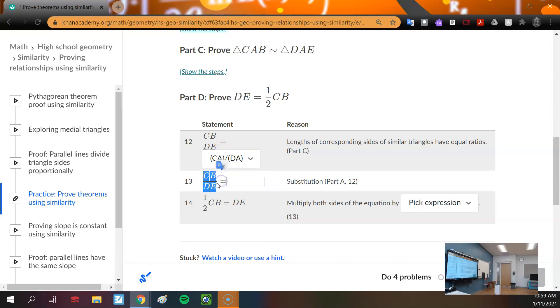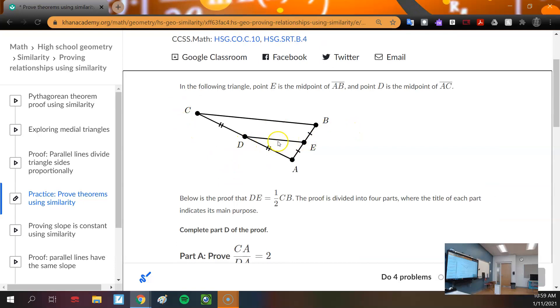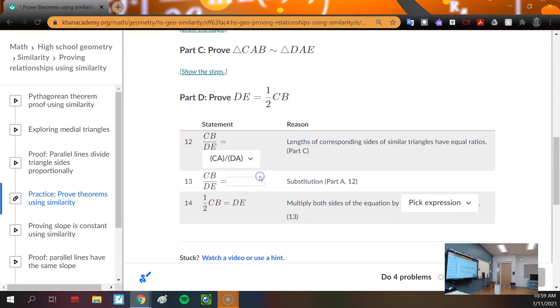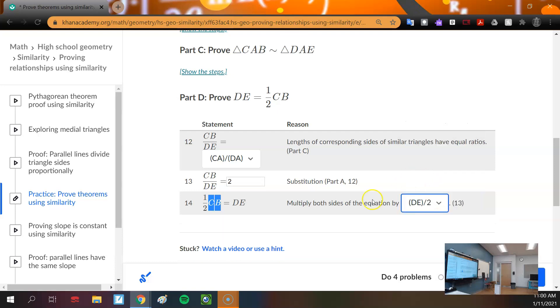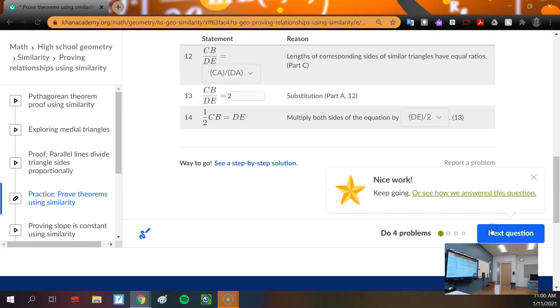Then we have to say what the ratio is. Well, CB compared to DE, big to small, so we already said it's 2 to 1. So we either just fill in 2, or you could fill in 2 to 1. Then multiply both sides of the equation by DE over 2, because the only way to get to 1 half CB is to get rid of this DE, so we need a DE on top, and we want division by 2, so we end up with a 2 in the denominator. There we go.